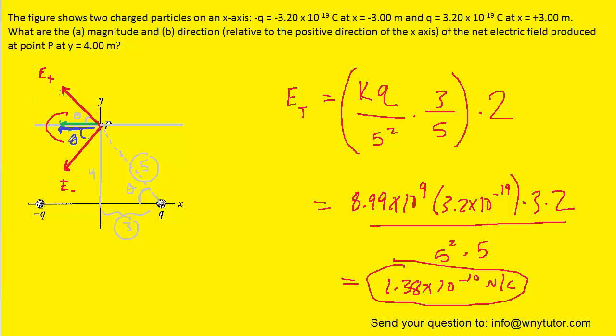And then the direction, we can see that the two x components are both pointing to the left. And so when we measure relative to the positive direction of the x-axis, then we would simply have to go out an angle of 180 degrees, since here's our positive x-axis. And we want the overall electric field to point this direction. So we would have to go 180 degrees. So this would be the correct answer to part B.